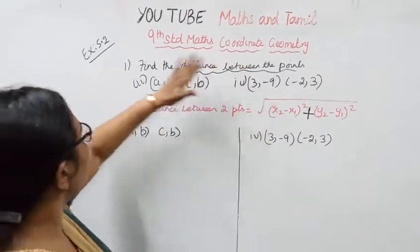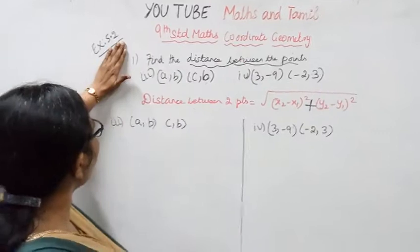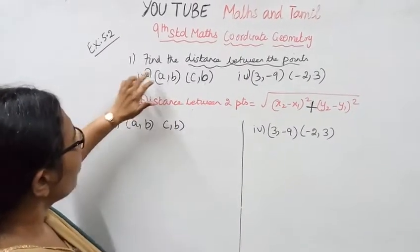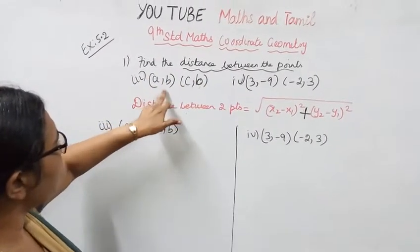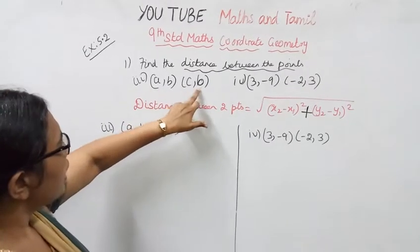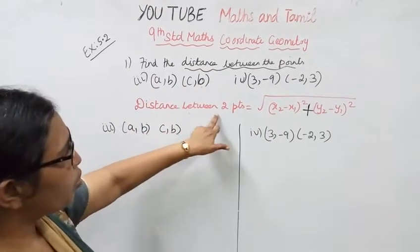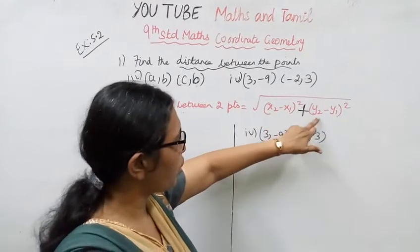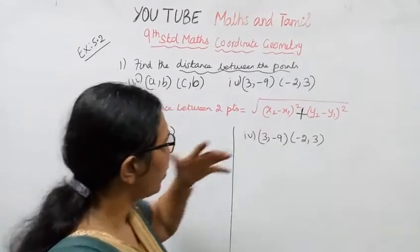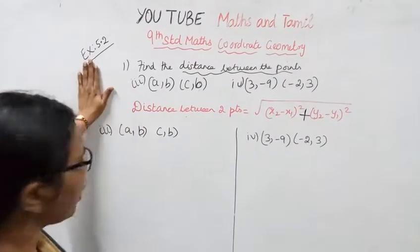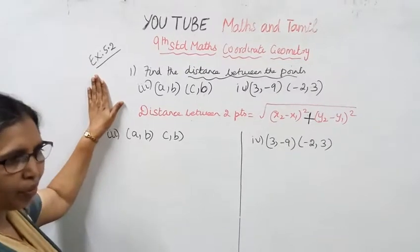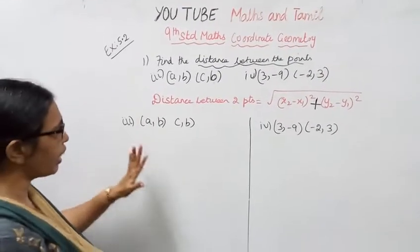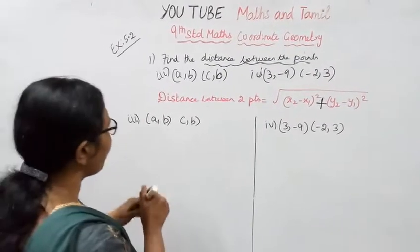9th standard math — coordinate geometry, exercise 5.2, 1st and 3rd subdivisions. Find the distance between the points A, B, C. The distance between 2 points formula is: square root of (x2 minus x1) whole square plus (y2 minus y1) whole square. For the 1st subdivision, it is direct.